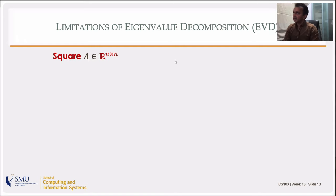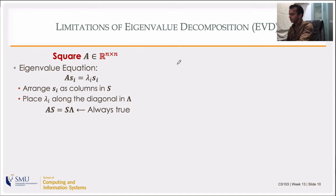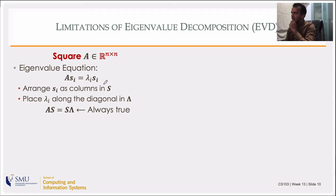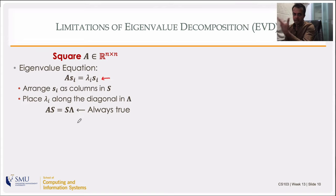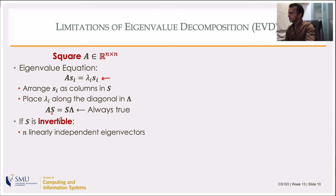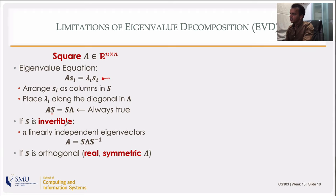Let's start with eigenvalue decomposition and its limitations. We can apply it only to a square matrix, but in computer science and data science our matrices are not going to be square. The basic definition: A times an eigenvector equals an eigenvalue times the same vector — a scaled version resulting from the transformation by matrix A. Arranging eigenvectors as columns of matrix S and eigenvalues on the diagonal of another matrix, we can write A = SΛ. If S is invertible, we write A = SΛS⁻¹.